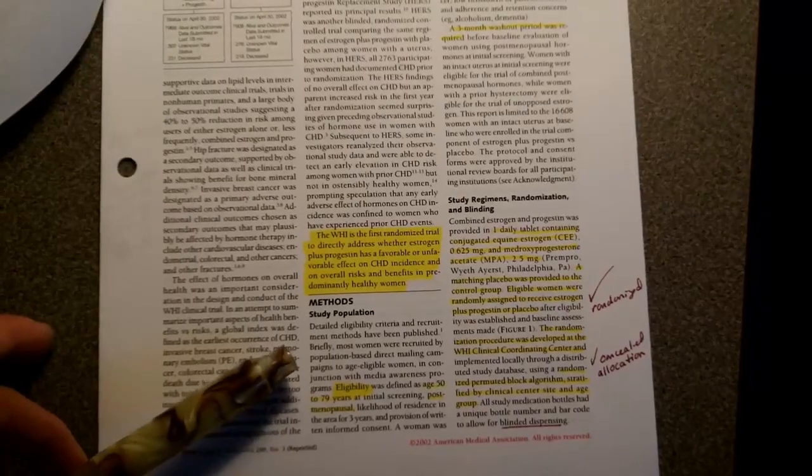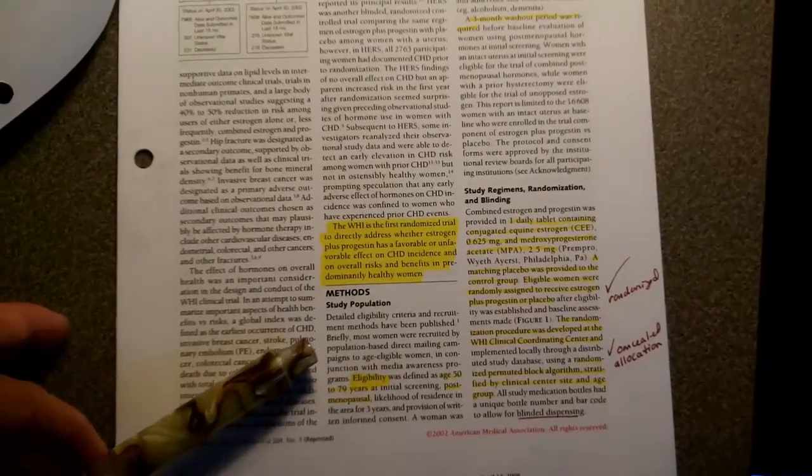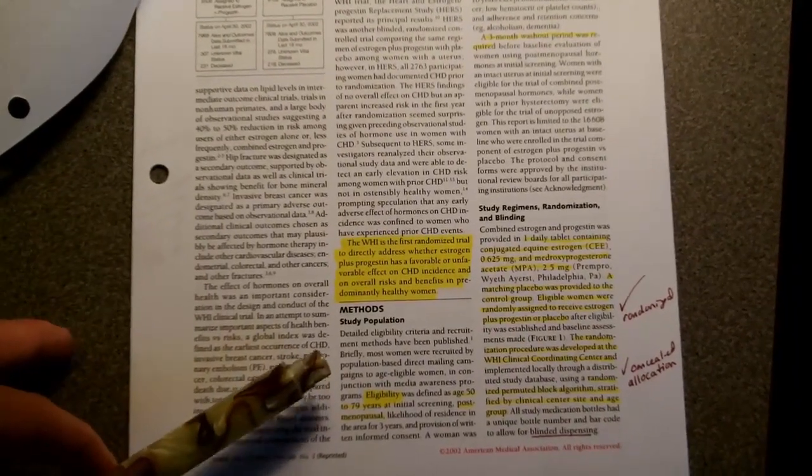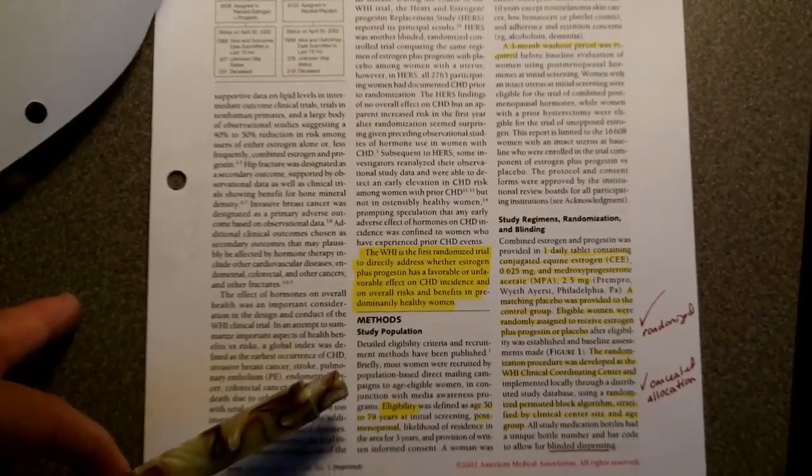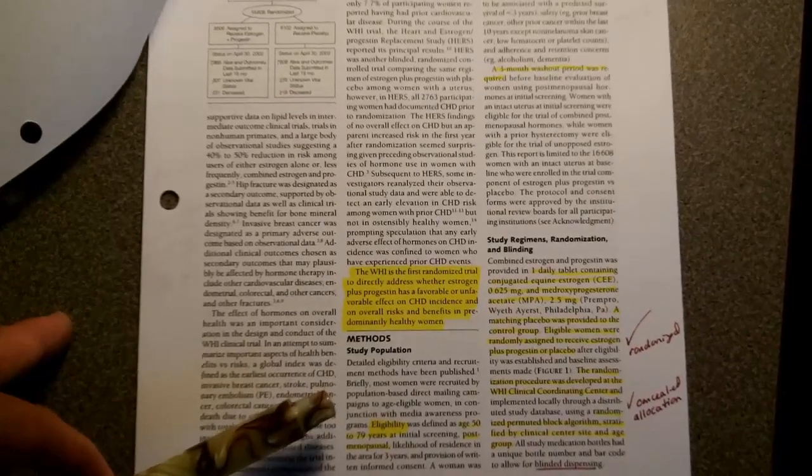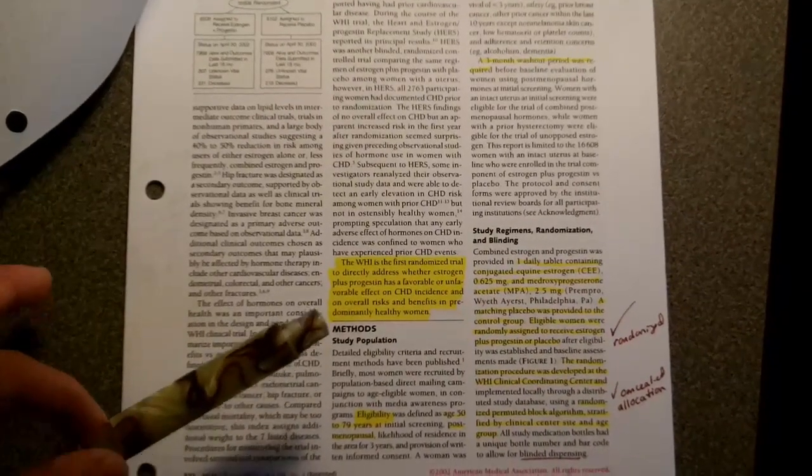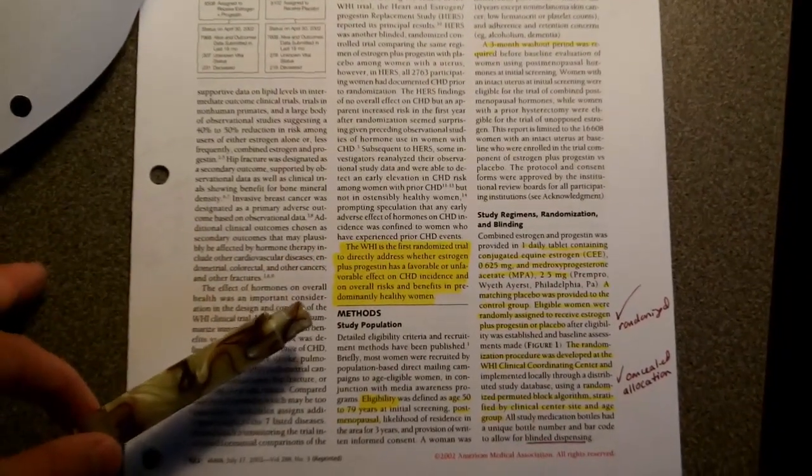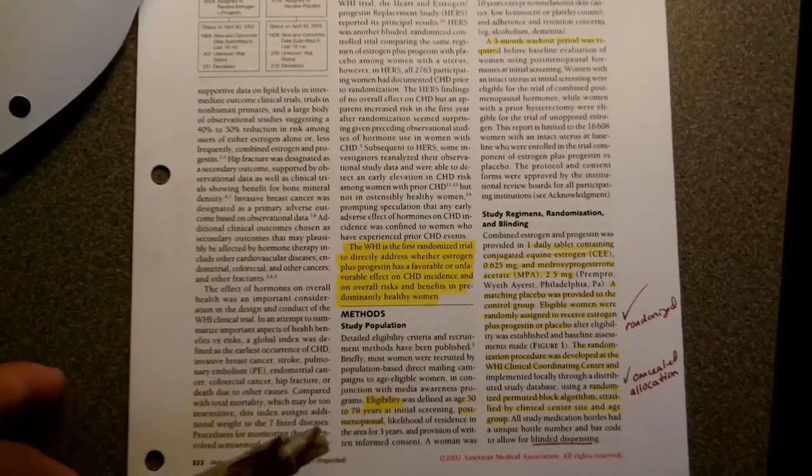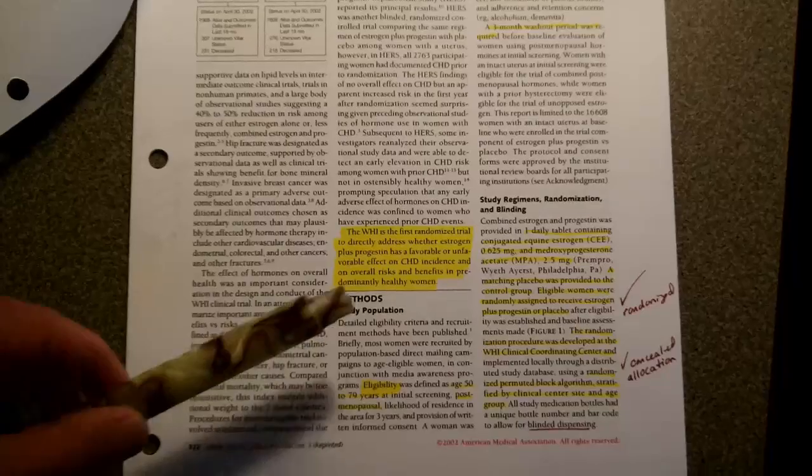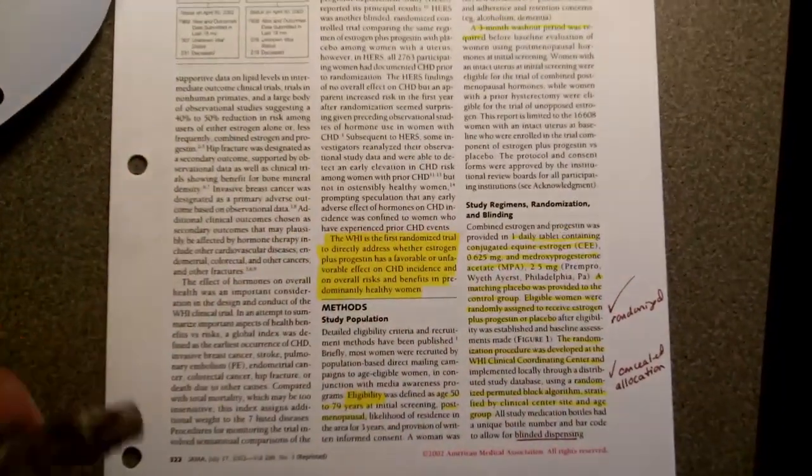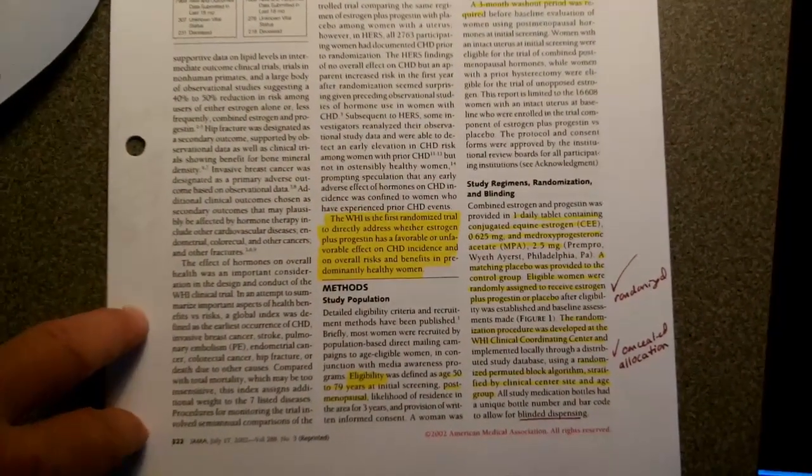And in the methods section, I'm going to critically appraise the paper against user's guides criteria for that individual type of paper. And there are separate user's guides for diagnostic test studies and therapy studies, harm studies, prognosis screening, etc. So I'm going to read those questions and look in the paper to see where those questions are answered. And I'm a pretty active reader, so I like to put lots of check marks, make notes to myself as I read the paper.